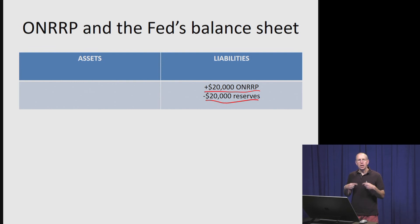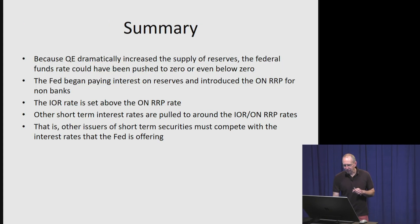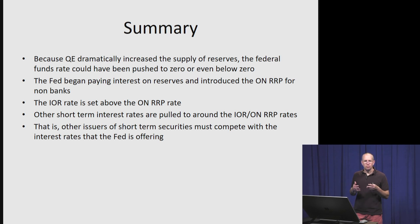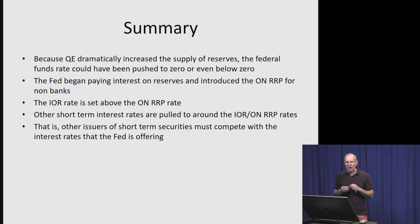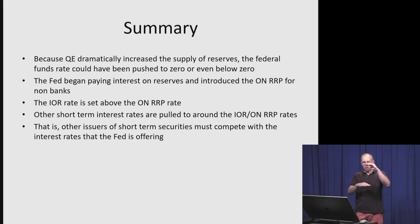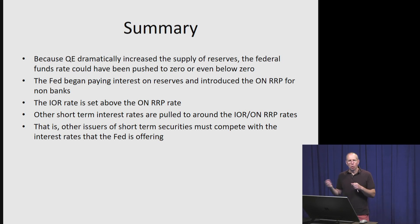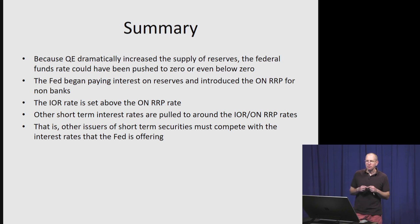Quick summary: quantitative easing dramatically increased the supply of reserves, shifting the reserves curve very far to the right, which would have caused the federal funds rate to be pushed down to zero or possibly even below. In response, the Fed began paying interest on reserves and introduced the ONRP facility for non-banks. The IOR rate is set above the ONRP rate, creating a corridor. Other short-term interest rates are pulled into this range through competition, so effectively the Fed is offering these two rates and other short-term rates migrate to around that range. Overall, it's been relatively effective. Thank you all very much.